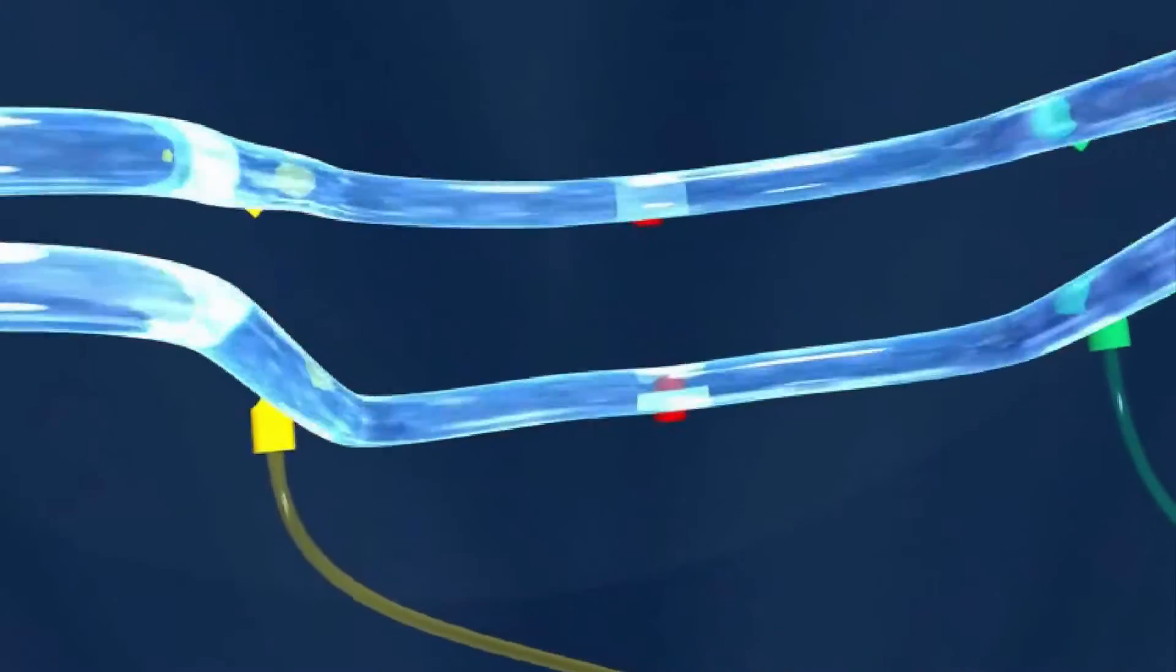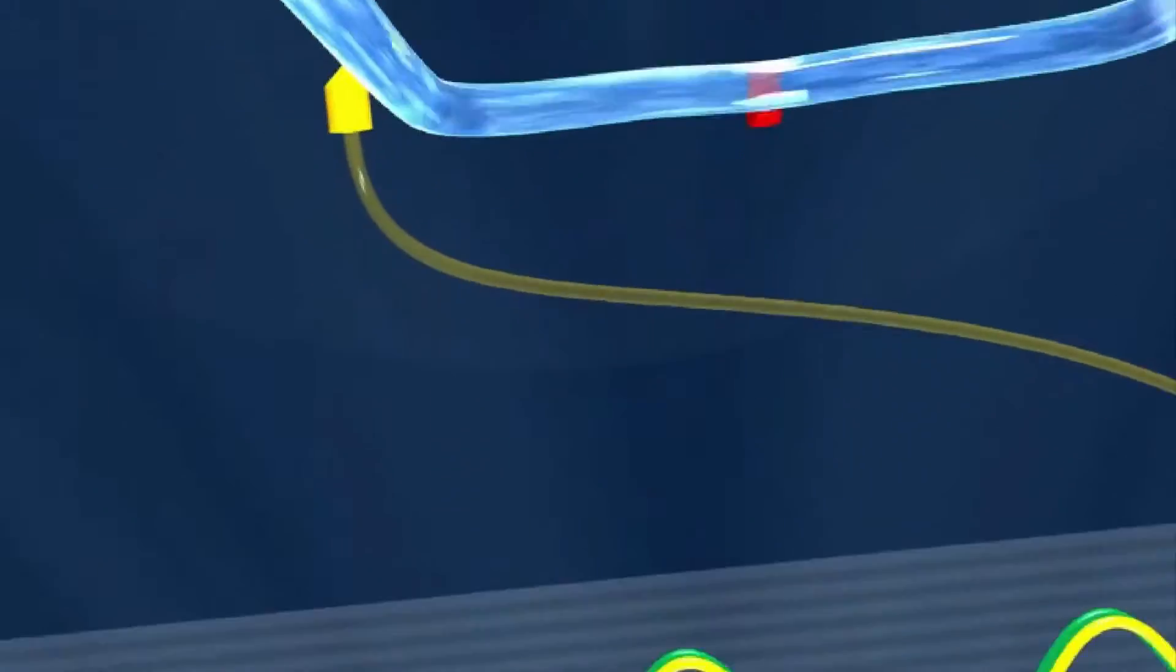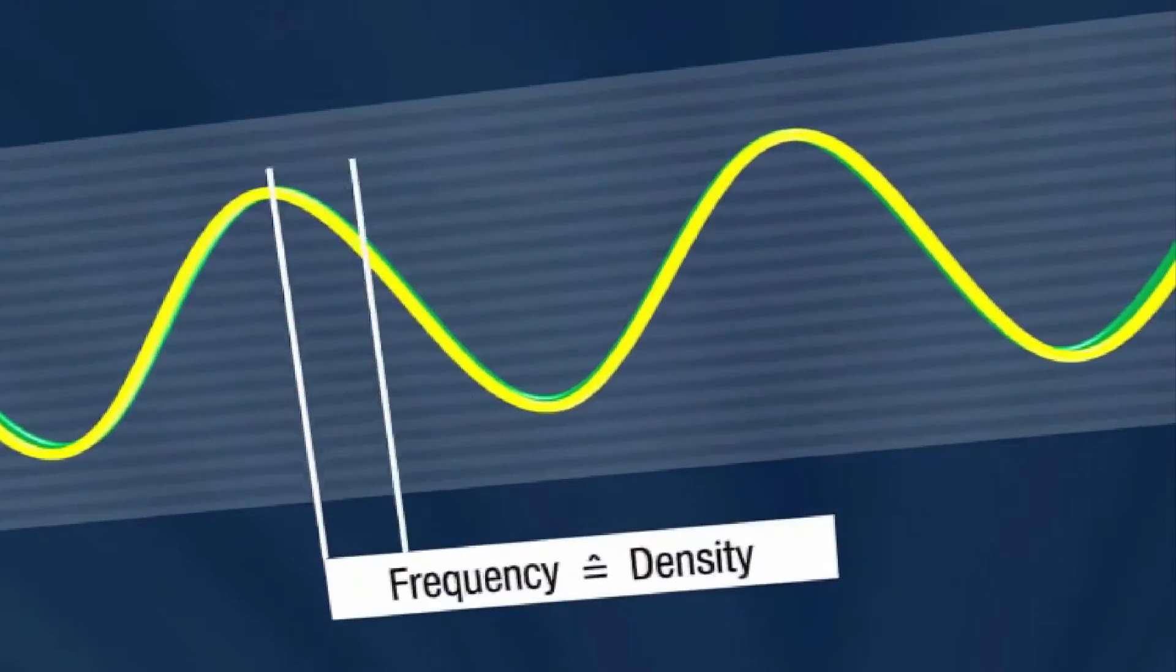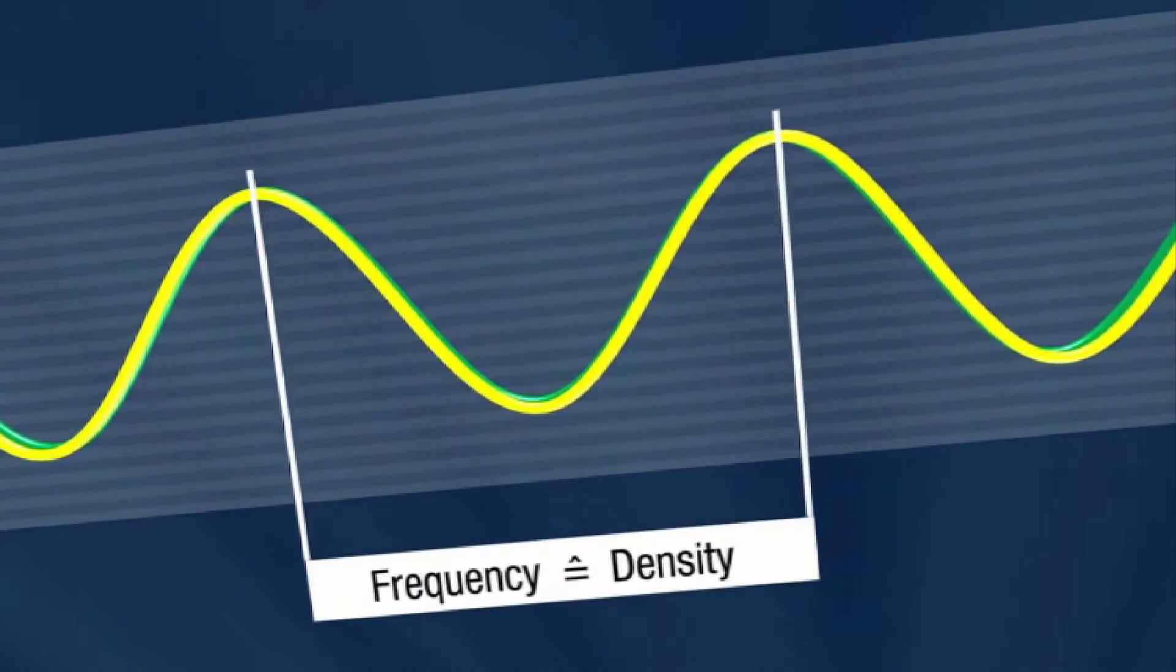Should the density of the media need to be determined, it is simply computed by evaluation of the oscillation frequency of the measuring tubes.